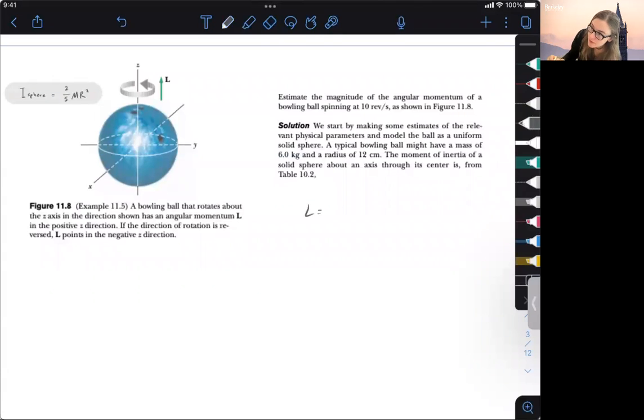So we know that the angular momentum equation, we have L equals IW. But one thing, the reason why we're doing this problem is I want to point out the concept of direction for angular momentum. So angular momentum and torque all have a direction because they are a cross product, right? I have this R cross P basically.